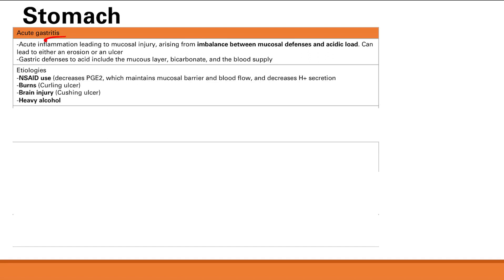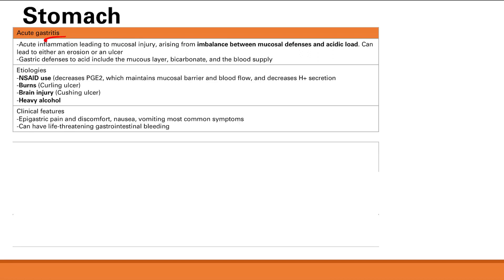Finally, we have heavy alcohol use, which causes direct damage to the mucosal barrier. Symptoms of acute gastritis are pretty general: pain, discomfort, nausea, vomiting. The key things to know are the etiologies. Also, you can have acute gastrointestinal bleeding if your ulcers lead to damage of the gastric blood vessels — we'll talk more about that in the peptic ulcer disease section.